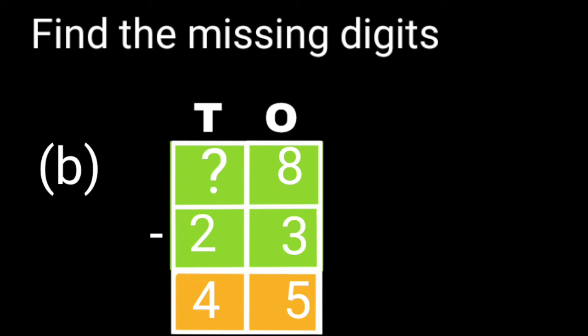Now let's move on to 10's place children. Here the digit of bigger number is missing. So we will add the difference and the smaller digit. 4 plus 2 is equal to 6.